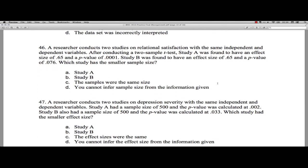Forty-six, a researcher conducts two studies on relational satisfaction with the same independent and dependent variables. So imagine they're doing an experiment. After conducting a two-sample t-test, that's a test that you use to compare the means of two different groups, study A was found to have an effect size of 0.65. Let's assume they're using something like Cohen's D, which looks at the standardized difference between group means. So we have an effect size of 0.65 and a p-value of 0.0001. So this is very much a statistically significant finding. Study B was found to have an effect size of 6.5 also and a p-value of 0.76. So it's got the same effect size but a very different p-value.